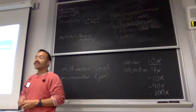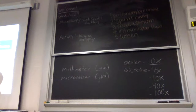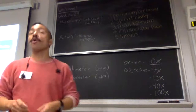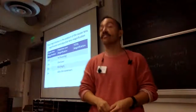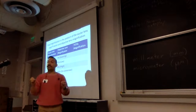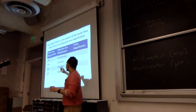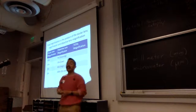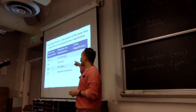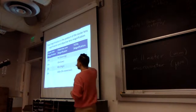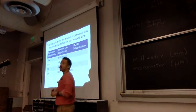Go ahead and pull out this table. But these lenses have special names. Whenever you start out looking at something, you always want to start at the lowest objective. You're going to start at the 4x objective, which is called the scanning lens, because you're scanning for something — you're starting out your search. The 10x objective is called the low power lens. The 40x objective is the high power lens. Note that the low and high power lenses are not the lowest nor the highest — they're in the middle. We will primarily be using these three lenses: 4x, 10x, and 40x objective lenses.